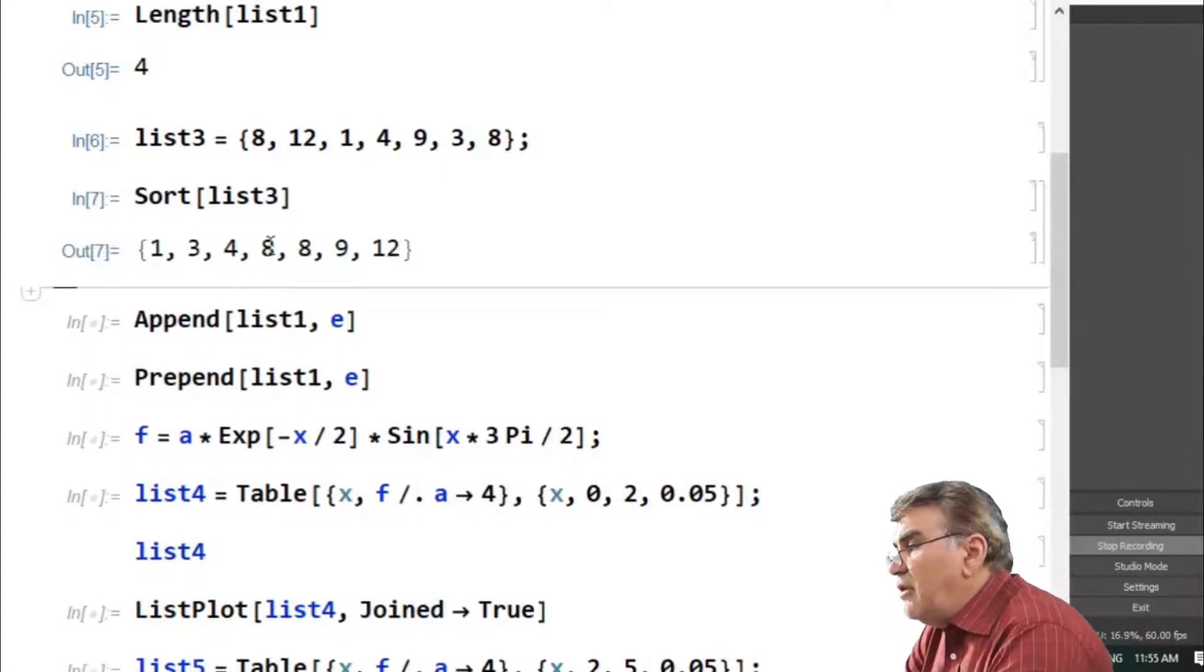One can add elements or lists to a list using the append and prepend commands. For example, if I want to add an element to a list, I have to write the list name and the corresponding element as arguments to the append command. Here I want to add element e as the last element to list1, and I'm writing them as the arguments of the append command.